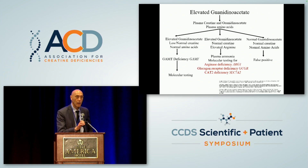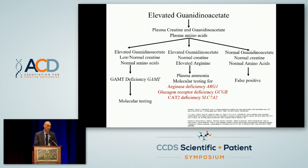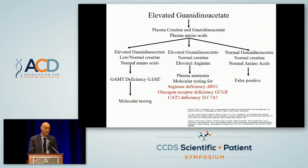When we think guanidino acetate, we think GAM deficiency, but there are other conditions in which guanidino acetate becomes elevated — in general, conditions in which arginine becomes elevated. The body uses arginine to synthesize guanidino acetate, so all conditions that increase arginine will result in elevated guanidino acetate. This includes newborns in the ICU who sometimes receive arginine, which is why the false positive rate may be higher in those babies.